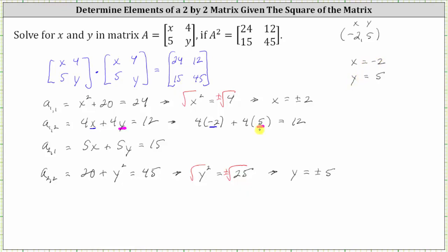We're not quite done yet. We need to make sure these values also satisfy the third equation. So let's substitute negative two for x and positive five for y.